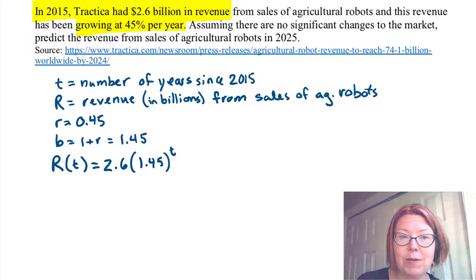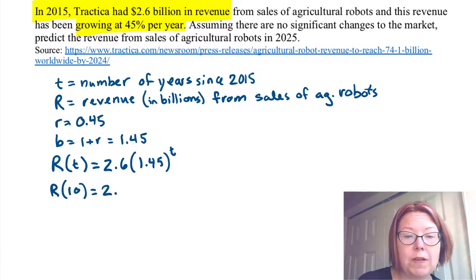There'll be no changes to the market. We want to predict the revenue from sales of agricultural robots in 2025. That's 10 years later. So we want to calculate R(10). So that'd be 2.6 times 1.45 raised to the 10th power.